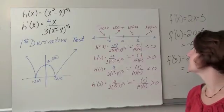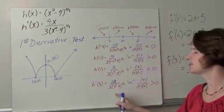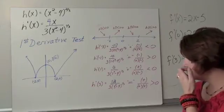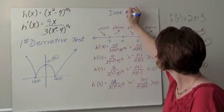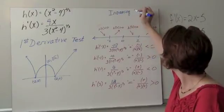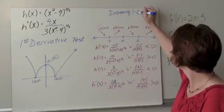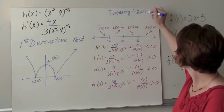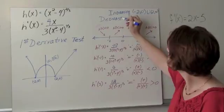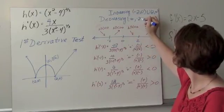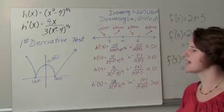And then we are increasing. When I plug in a number that's bigger than 2, I picked 3. You can pick your favorite number. And we get a positive divided by the product of 2 positives. And so we would be increasing from negative 2 to 0 and from 2 to infinity. And we are decreasing from negative infinity to negative 2 and 0 to 2. Increasing and decreasing.